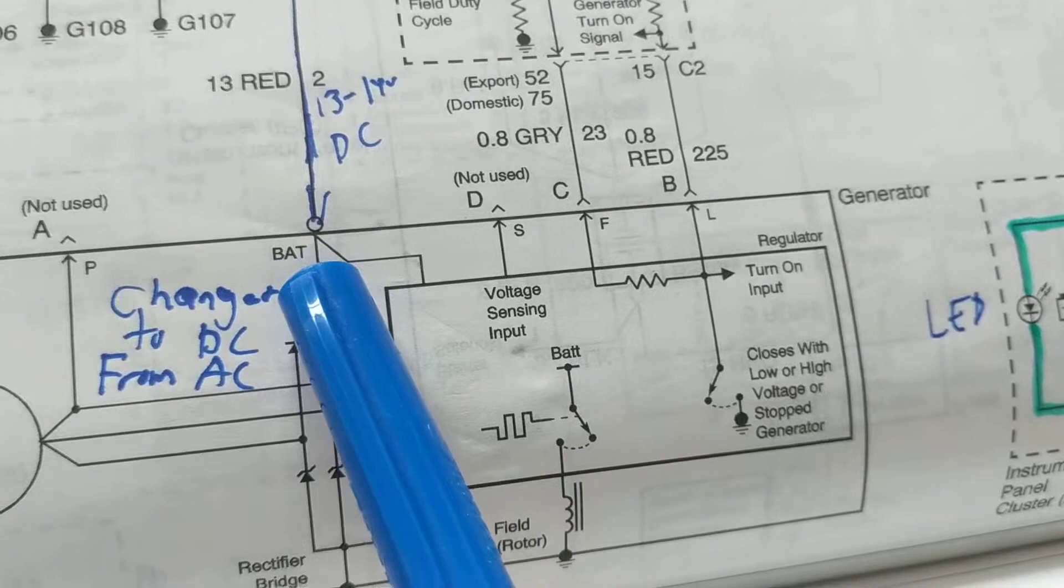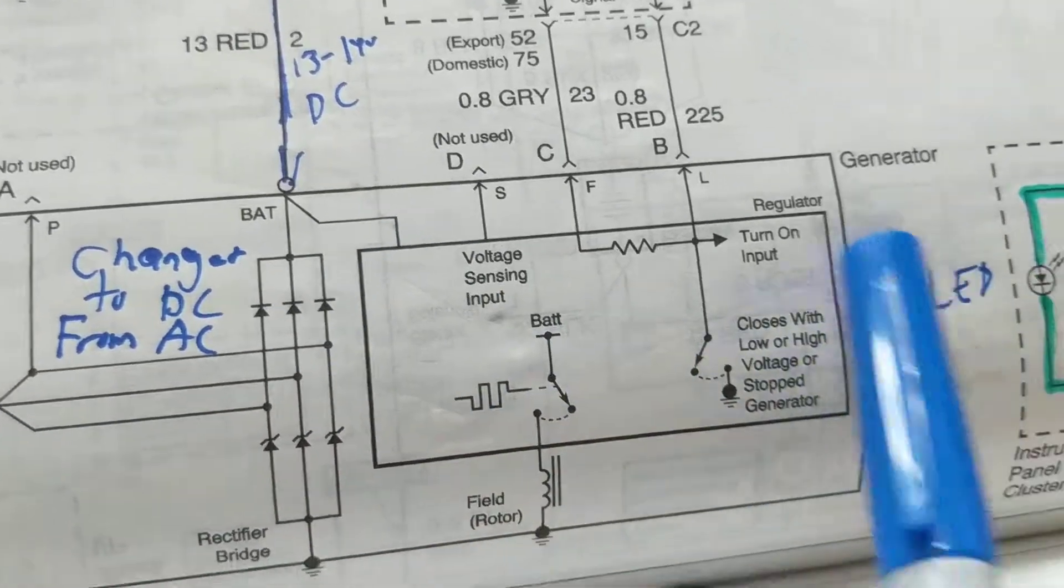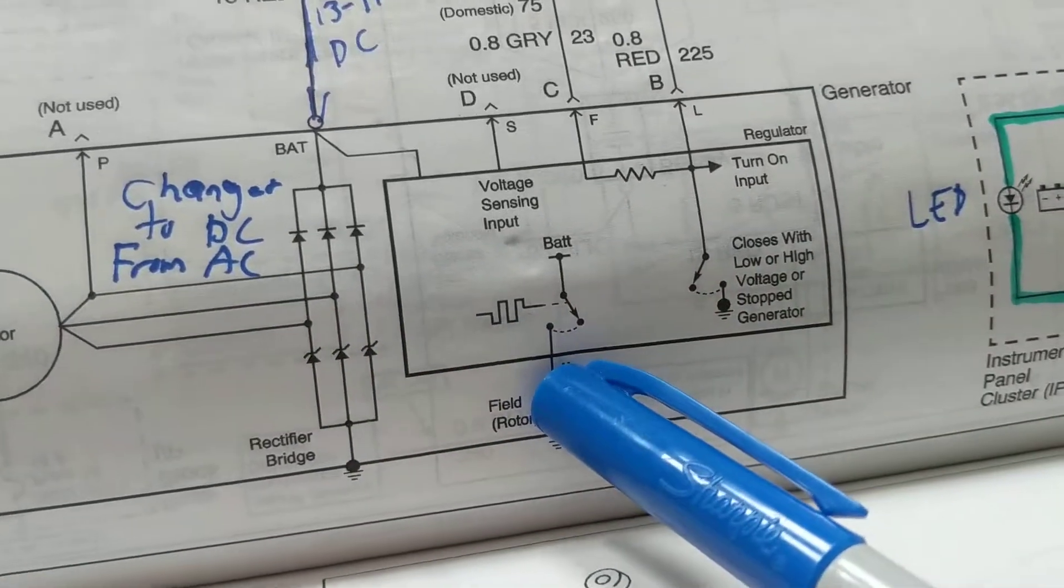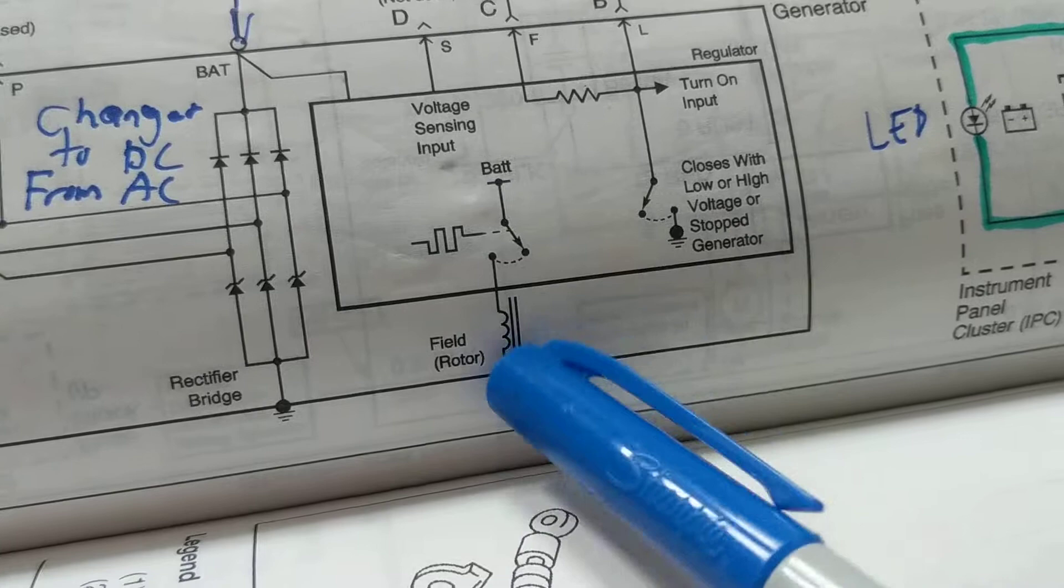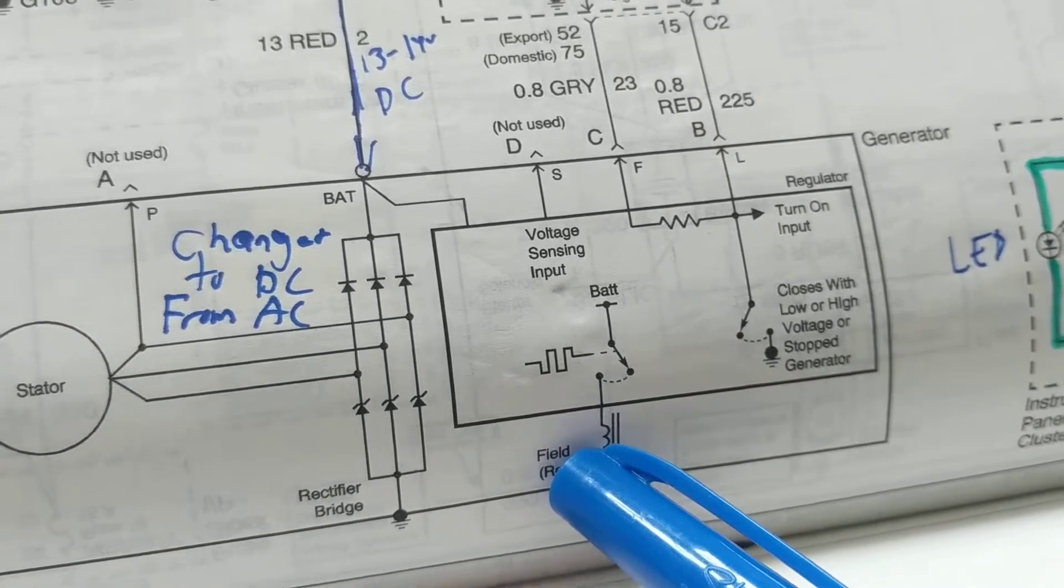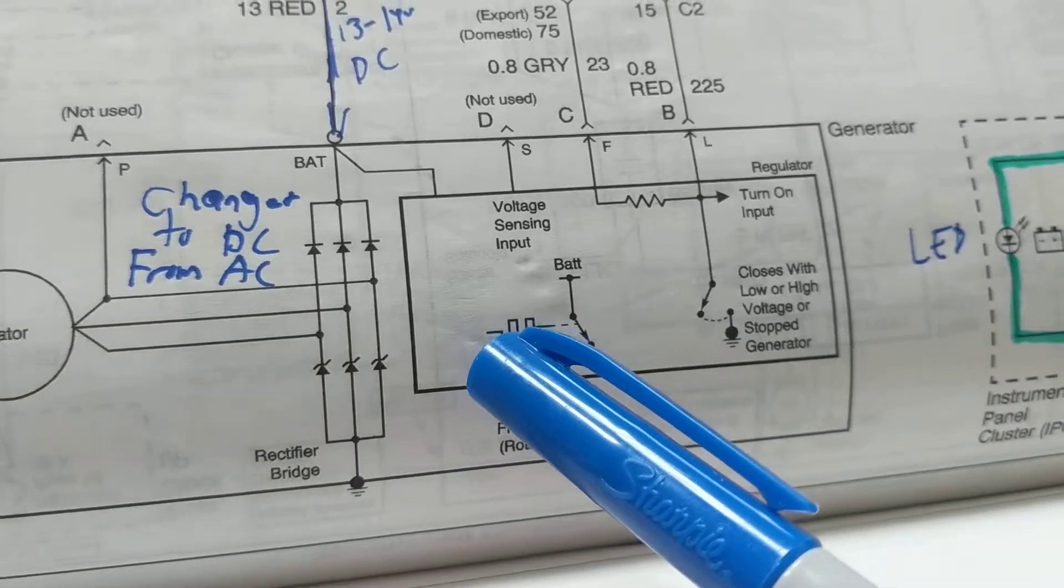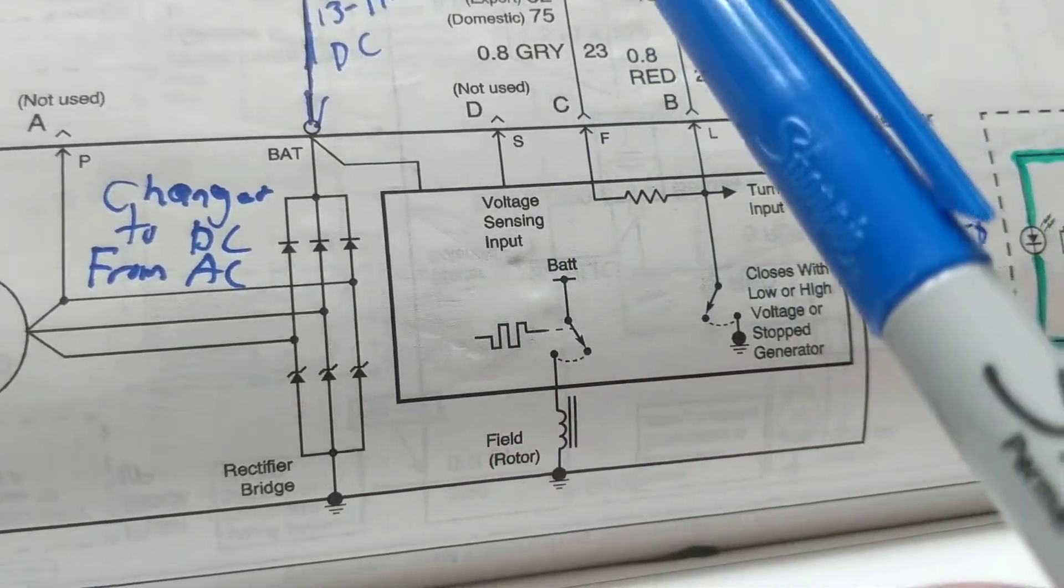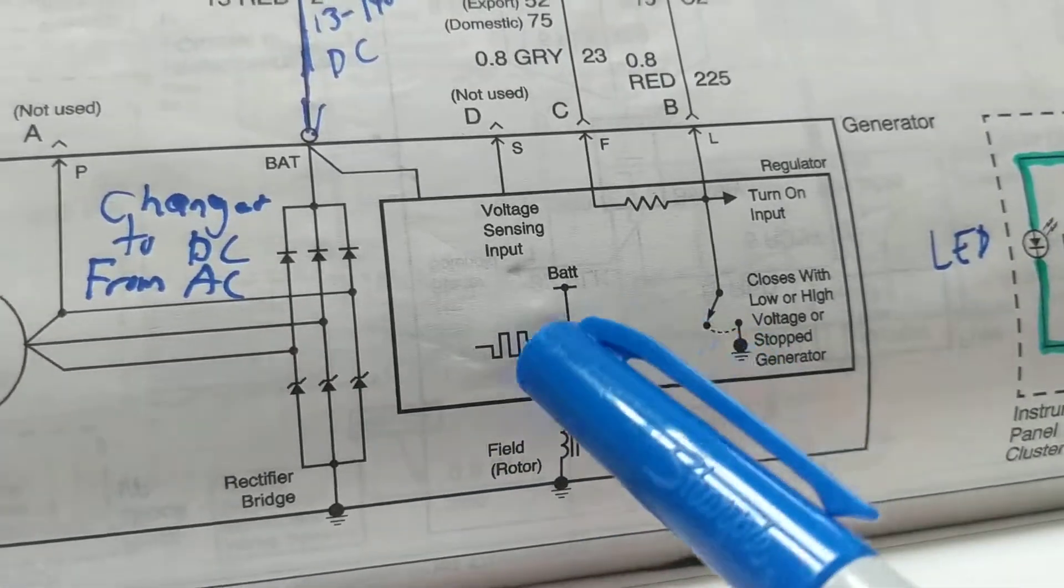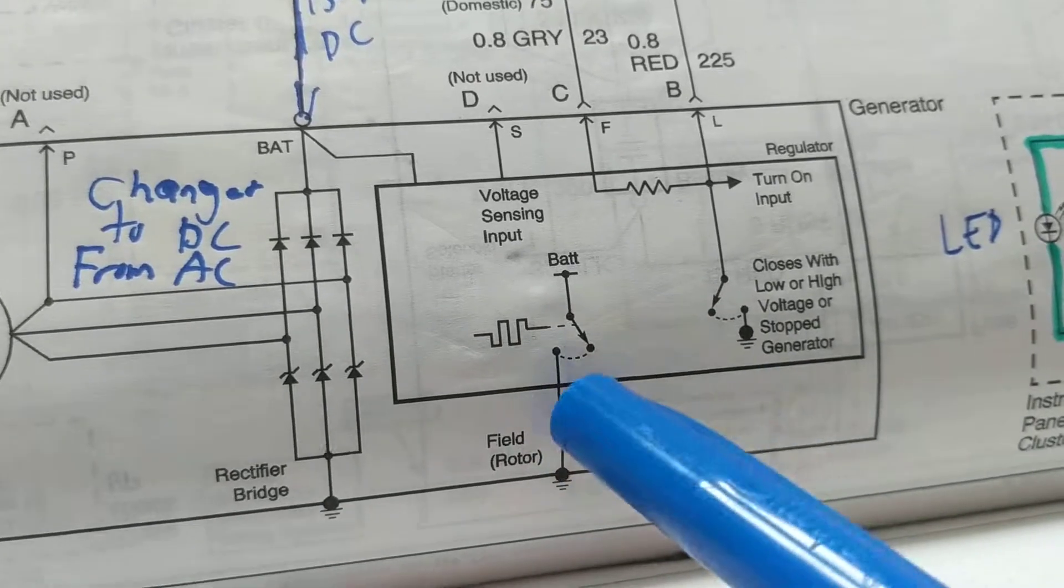The DC output also goes to this part of the generator - the regulator. The DC, let's say 13.6 volts, goes to charge the battery. At the same time, it goes into the regulator so the regulator knows how much voltage is being created by the generator itself. It has to either turn on and off the rotor to create more or less voltage, more or less current, to supply the accessories. By accessories, I mean if you put your lights on, theft deterrent alarm systems, any system that will pull more of a load.